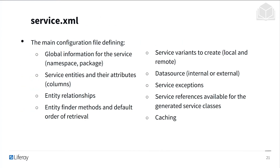Talking about ServiceXML, this is the main configuration file that defines a bunch of things, including the global information for the service. You have service entities and their attributes, different relationships between entities, finder methods, and different variants to create — the local service and the remote service. You also have data sources, service exceptions, service references available for generated classes, and caching. So there are a bunch of customizable and configurable features.